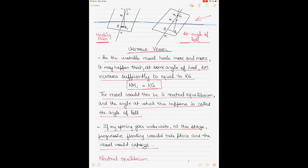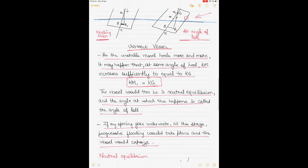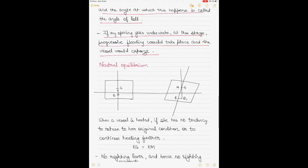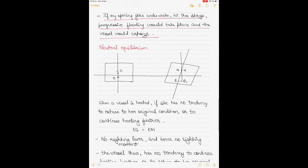At the angle of loll, if any opening goes underwater, progressive flooding would take place and the vessel would capsize. This could be a hull door or a bow door going under the water as the vessel floods. There are ways to correct the angle of loll, which will be discussed in future videos with numerical examples.